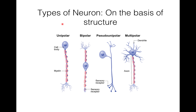There are some types of neurons based on their structure. First is unipolar neuron, second is bipolar neuron, third is pseudo-unipolar neuron, and fourth is multipolar neuron.